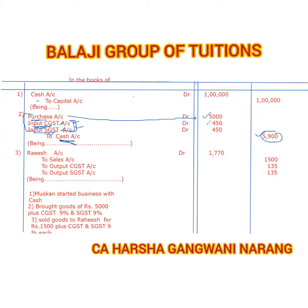So 9% of 5,450 for CGST and 9% of 5,450 for SGST. That is how you calculate the total GST on the purchase.